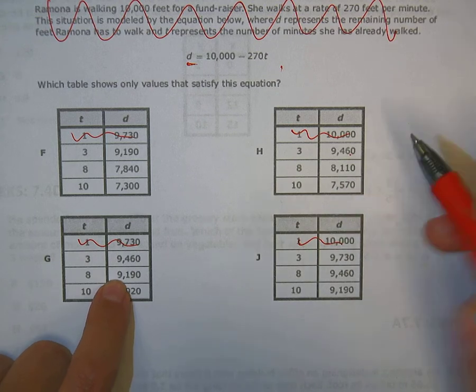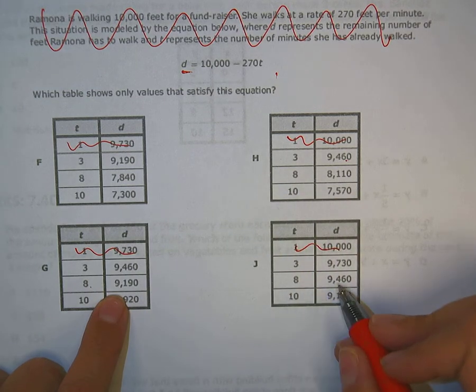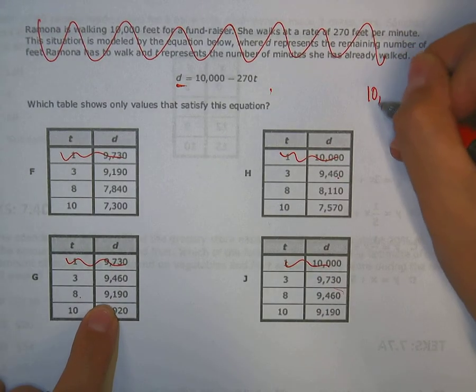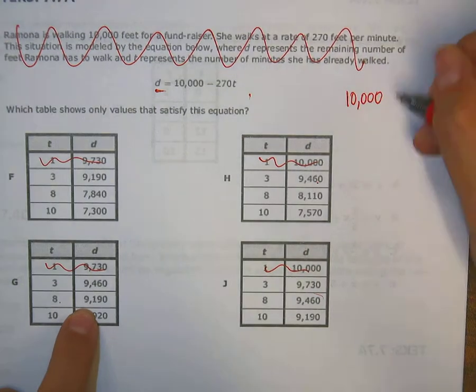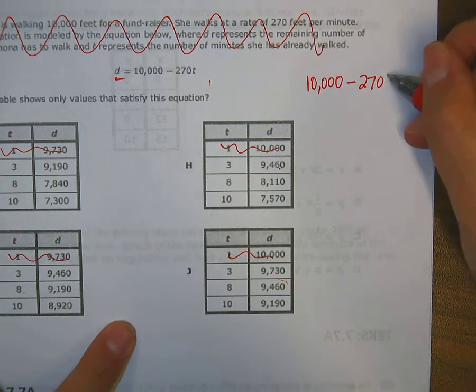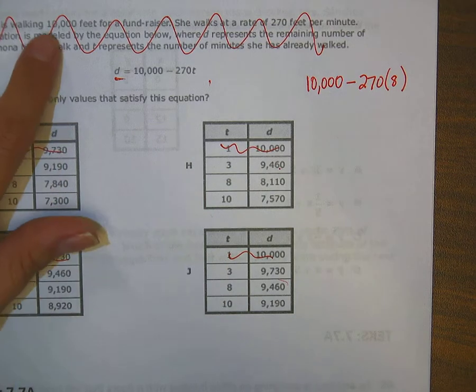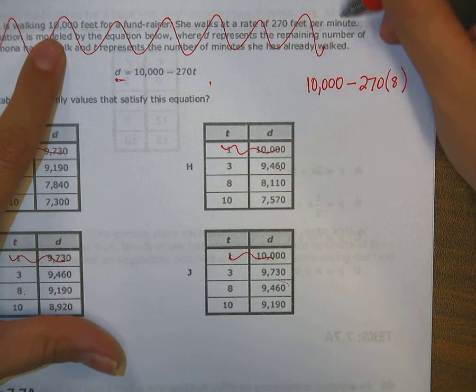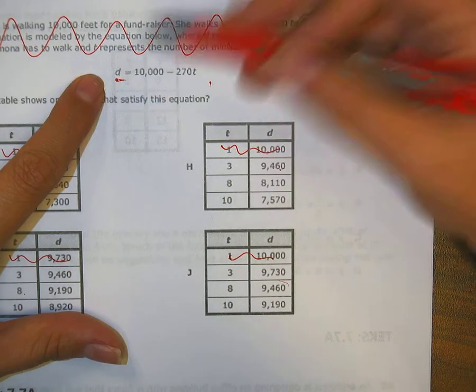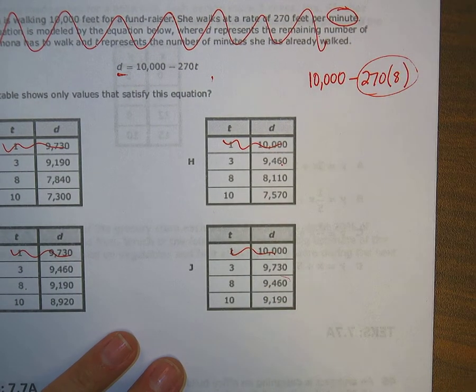Eight looks like it's different. Look, eight has an answer of that, eight has an answer of that, eight has an answer of that, and eight has an answer of that. Because they're all different answers, that means all I have to do is substitute in once. So 10,000 minus 270, and instead of writing a t, I'm going to plug in the number eight. The rate is 270 per minute and d is the remaining number of feet, so yes, we're doing this right.